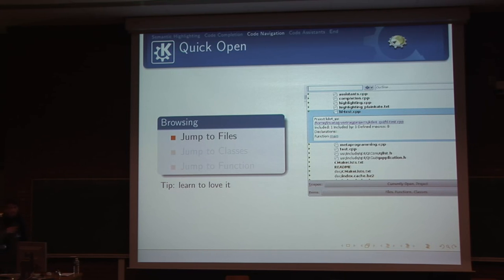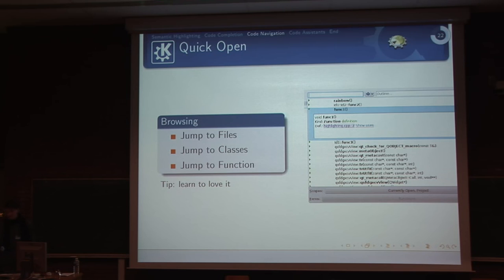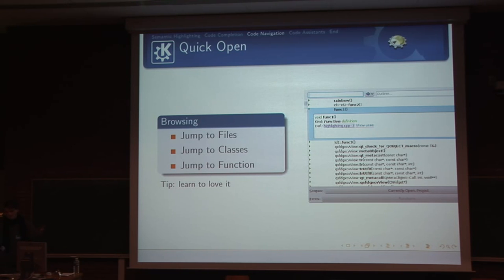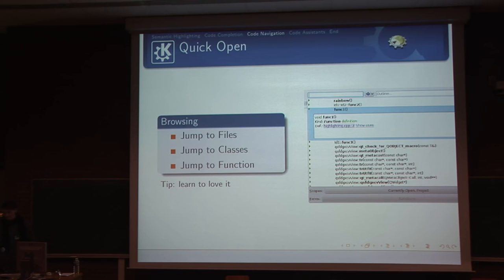Quick Open is also a toolbar item at the top, but you can use shortcuts to open the dialog. This way you can very quickly open any file, any class, or any function — or any combination. Just hit the shortcut, insert a pattern like 'foobar', and it shows every file with that pattern in your open project or include path. I personally use this 90% of the time, and the normal Ctrl+O file open dialog only in the other 10%.